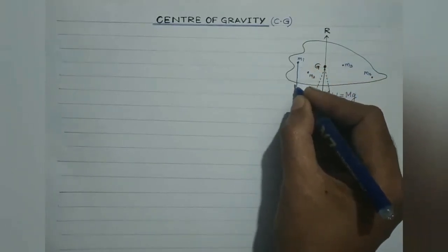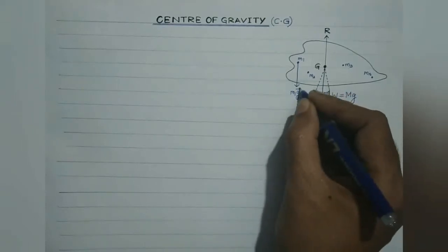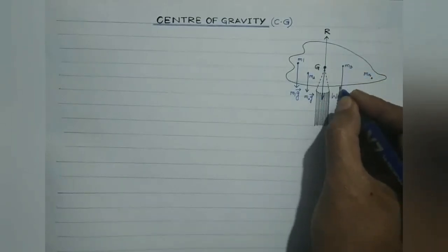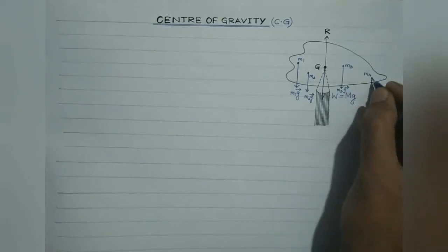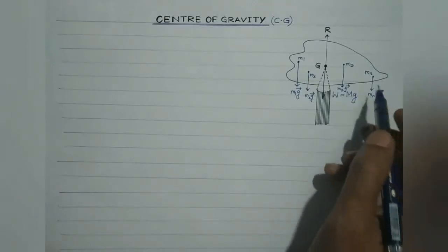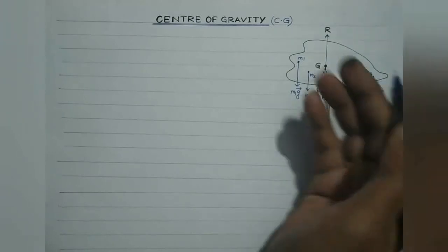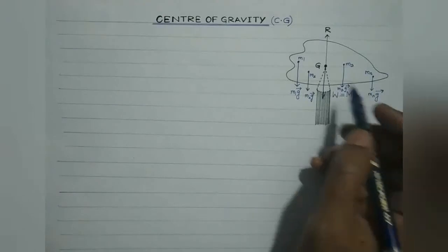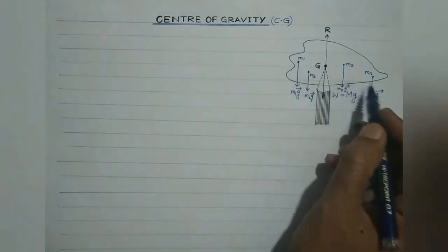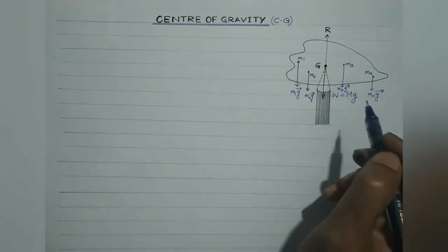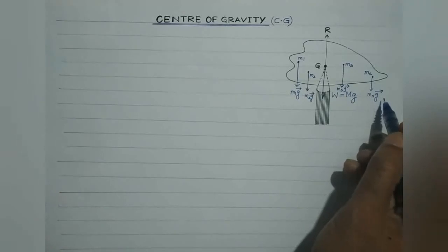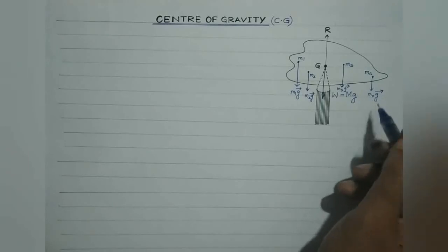A large number of parallel forces directed vertically downward act on the body: M1g, M2g, M3g, and Mng. These are all acting on the body in the downward direction and are parallel forces. M1, M2, M3, Mn are the masses of the particles constituting the body.